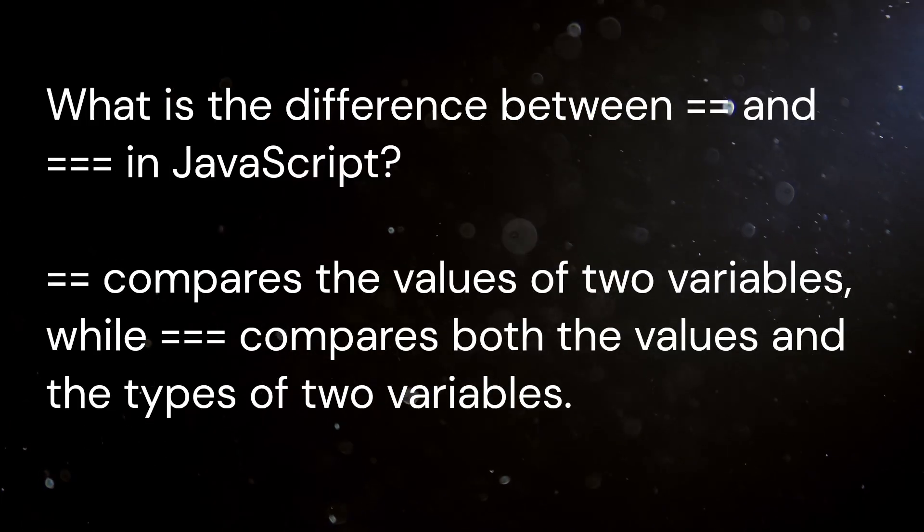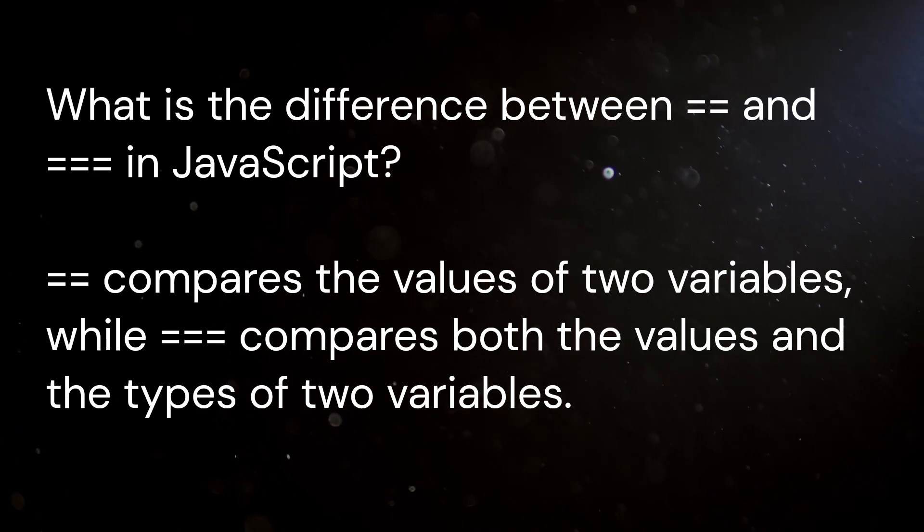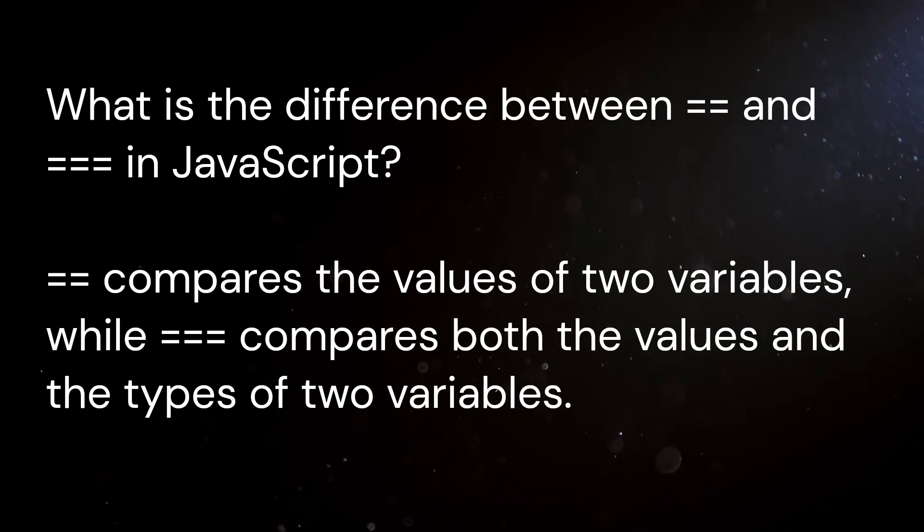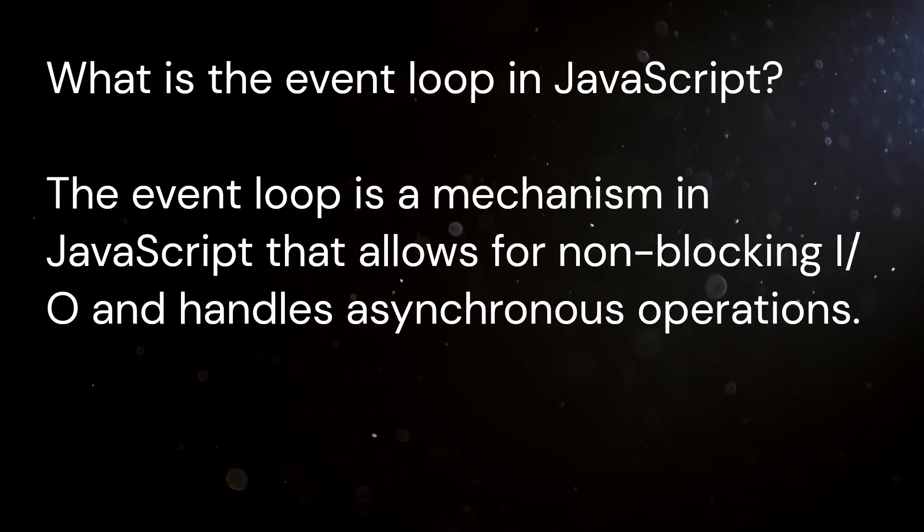3. What is the difference between == and === in Javascript? == compares the values of two variables, while === compares both the values and the types of two variables.